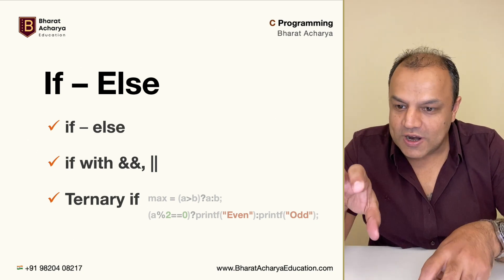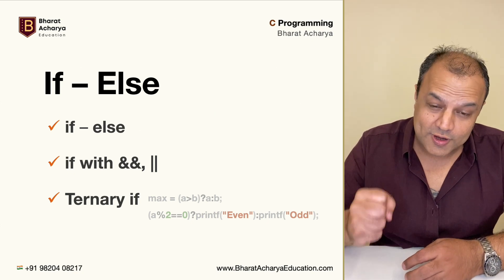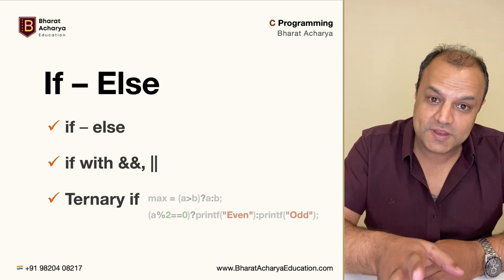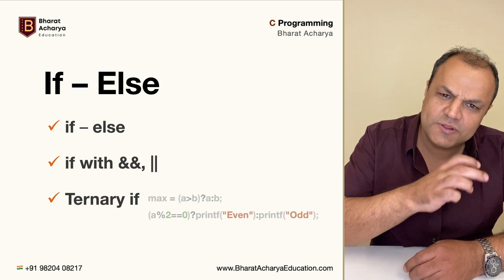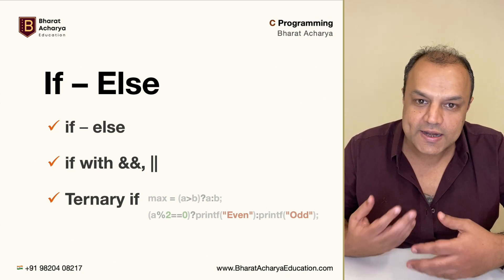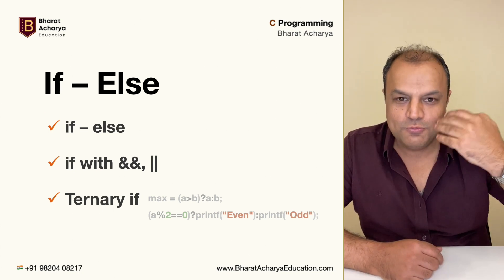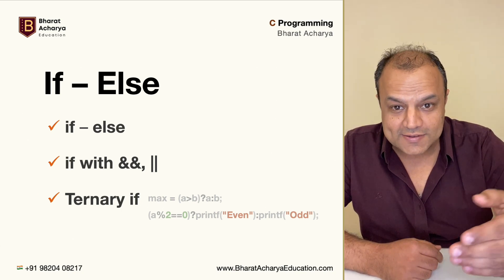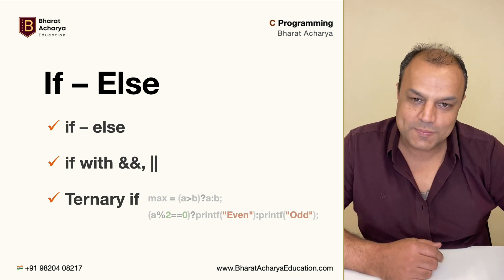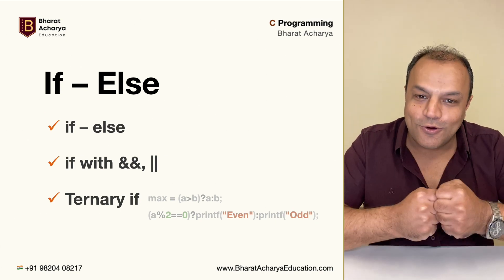The correct approach is to understand each of those things as a separate entity and practice them rigorously. Once you've practiced each one thoroughly with programming examples, combining them to create big programs becomes very easy and second nature. Then your effort is to develop good, clear logic, and that's when you move out of C programming into DSA, then object-oriented programming, and keep increasing level by level — that's the whole journey of a programmer.